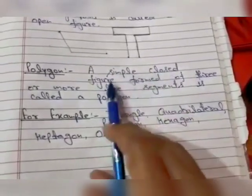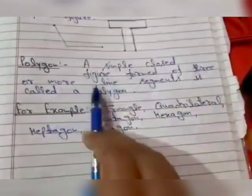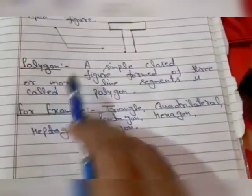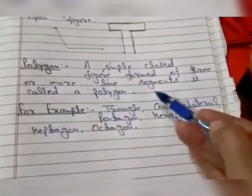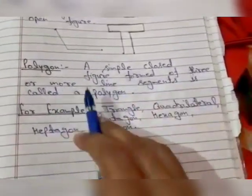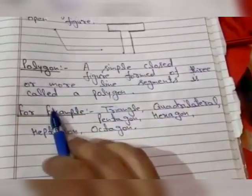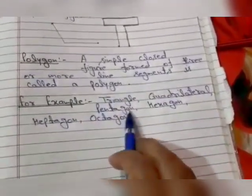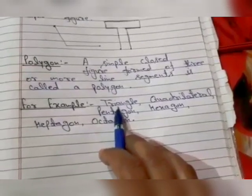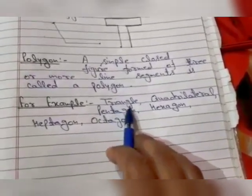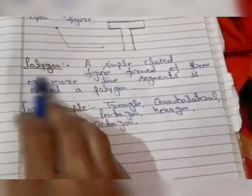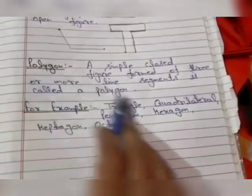Polygons: a simple closed figure formed of three or more line segments. جو three یا اس سے زیادہ line segments سے بنا ہوتا ہے اسے ہم polygon کہتے ہیں. For example, triangle - we use three line segments, so triangle is also a polygon. Quadrilateral is a four-sided figure, so this is also a polygon. Pentagon is a five-sided figure.